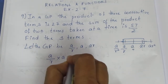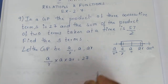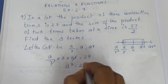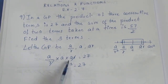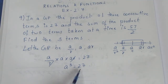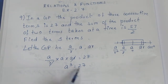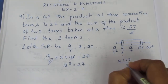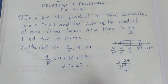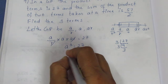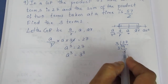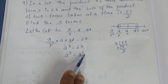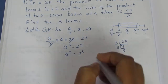A by R into A into AR is equal to 27. If we cancel R, A cube is equal to 27. To find A, we take the cube root. 27 by prime factorization: 3 nines are 27, 3 threes are 9. So A cube is equal to 3 cube, which means A is equal to 3.